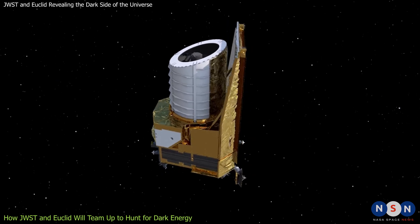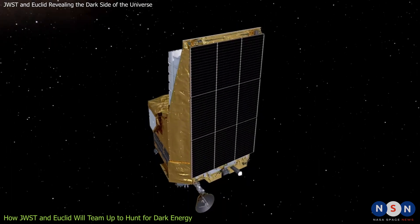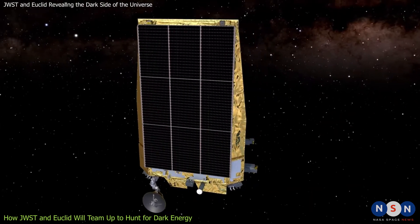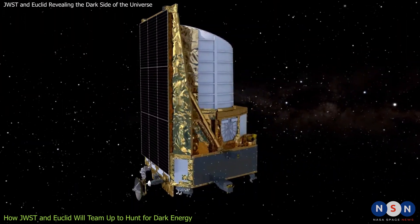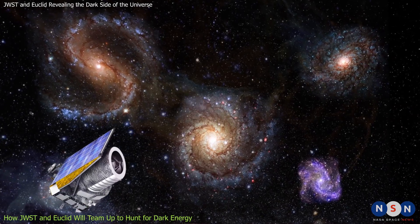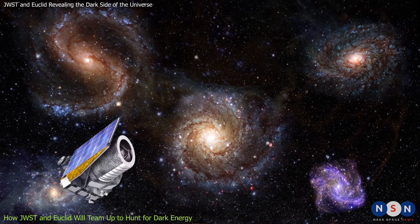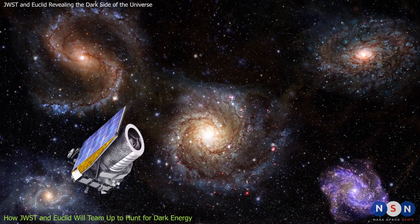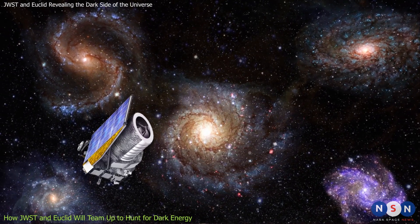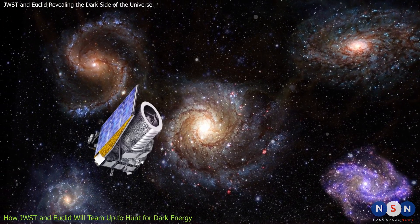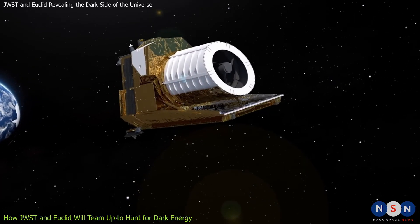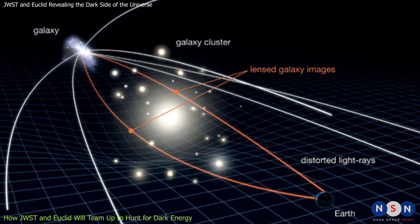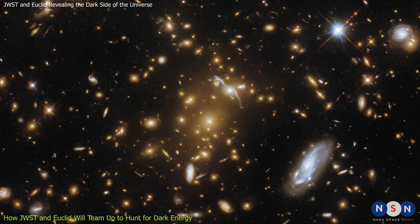Euclid is a visible and near-infrared telescope that is designed to map the distribution and evolution of dark matter and dark energy in the universe. Euclid will do this by surveying more than a billion galaxies across 15,000 square degrees of the sky, covering about a third of the entire sky. Euclid will use two main techniques to study dark matter and dark energy: weak gravitational lensing and galaxy clustering.